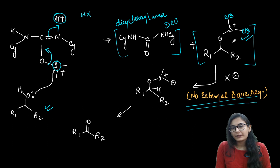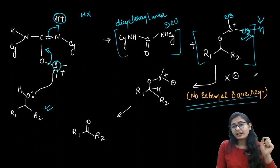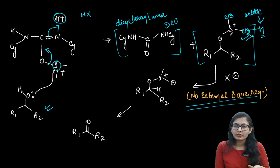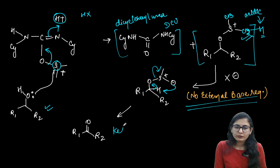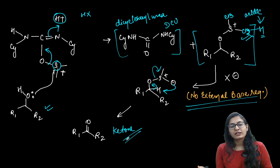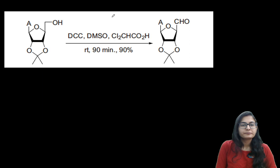No external base (like triethylamine) is required. Instead, X⁻ — the conjugate base of the acid used — removes the proton from the methyl group connected to the positively charged sulfur. This works because the acid is weak with a strong conjugate base, and the proton on sulfur is highly acidic since sulfur is electropositive. Then CH₂⁻ attacks internally and the same mechanism gives the ketone product.